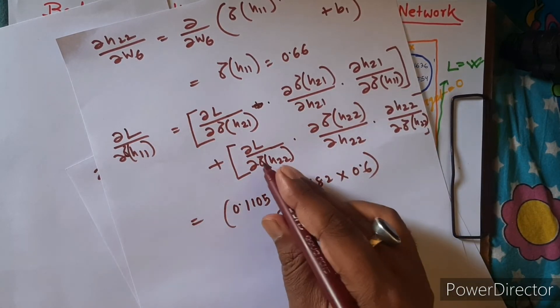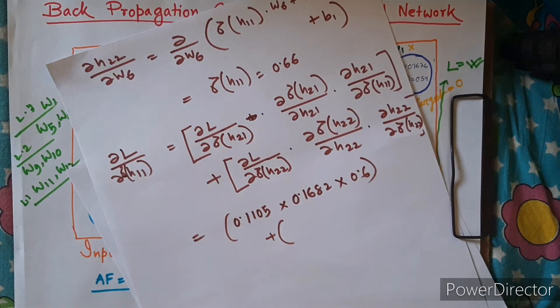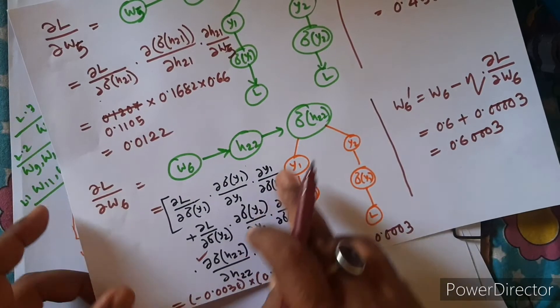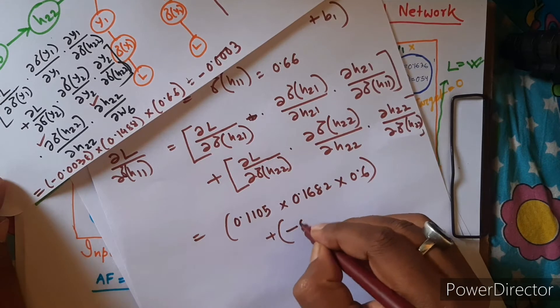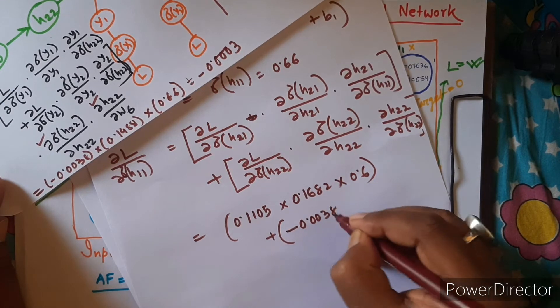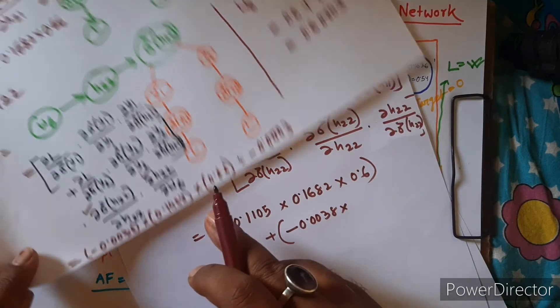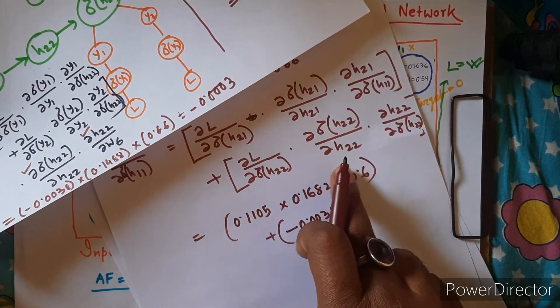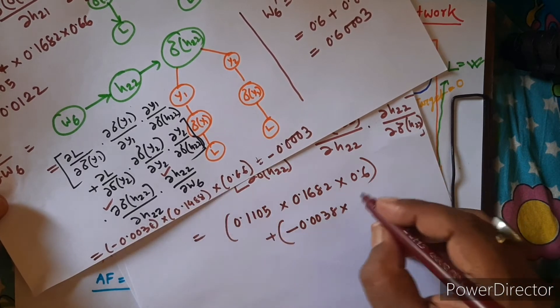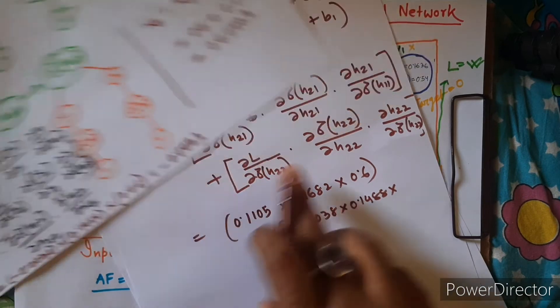And the second portion, do you know this? Yes, we have already calculated. So this one is actually this, right? So it will be directly this. And the second portion also you calculated, right? So derivative of sigma of H22 with respect to H22 you already calculated, so it will be 0.1488. The last portion you have not done yet.